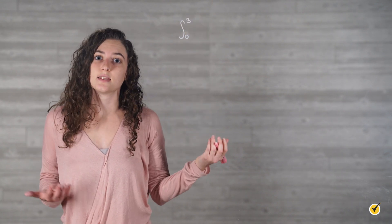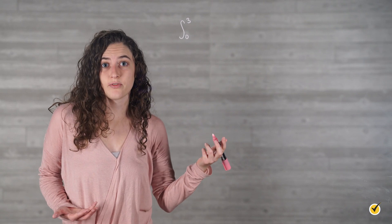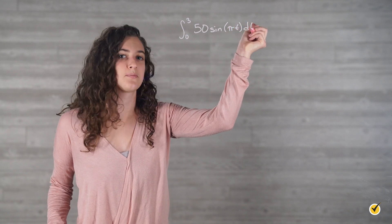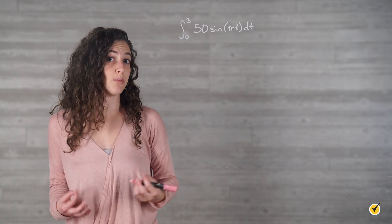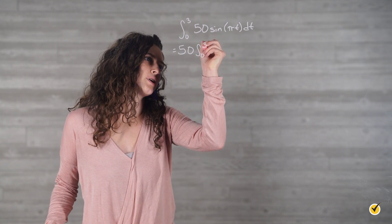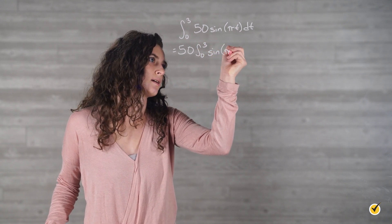First, we want to know about Ashton's displacement over the given time interval. Remember, displacement is essentially the net change in position, so the negative area we get when Ashton is driving back home is offset by the positive area when he drives towards his family. To calculate his displacement, we simply take the integral of v(t) on the time bounds given. So his displacement from t = 0 to 3 is the integral from 0 to 3 of 50 sin(πt) dt. Since 50 is a constant, we can pull that out to the front: 50 times the integral from 0 to 3 of sin(πt) dt.